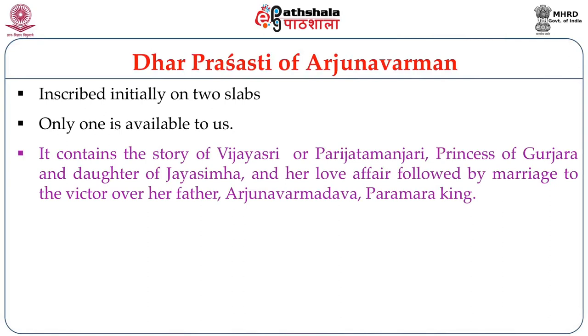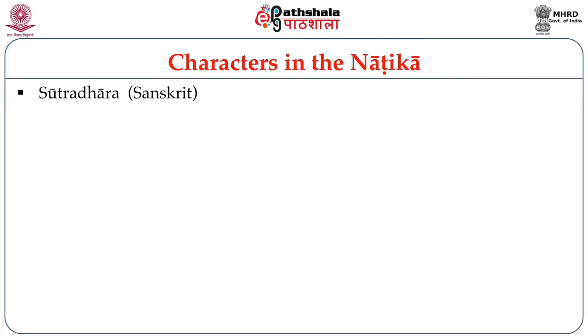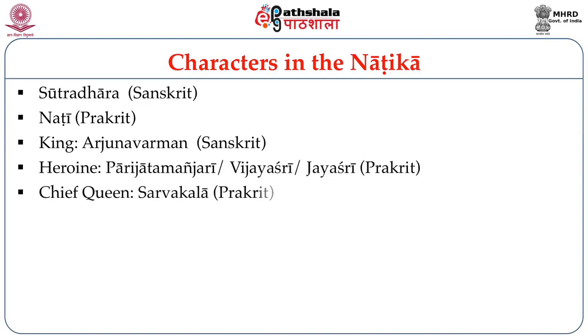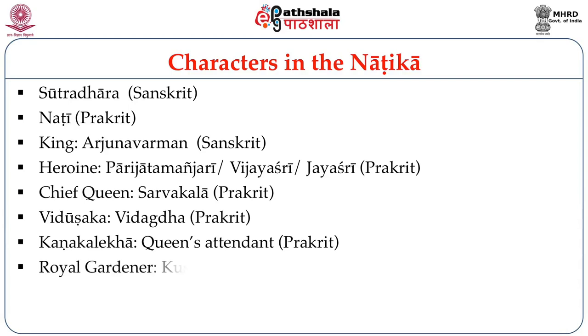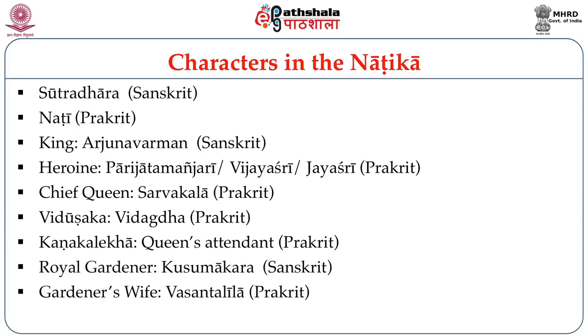The drama is set when Arjuna Varman defeats Jayasingha, the Chahamana king, who was retreating. Later, Arjuna Varman gets married to Parijat Manchari, who is the daughter of Jayasingha. She is called Jaya Sri as the daughter of Jaya Singha, and Vijaya Sri as the fruit of victory in battle. Other characters include a Sutradhar, the Natty who accompanies him, King Arjuna Varman, heroine Parijat Manchari, Chief Queen Sarvakala, Vidushaka named Vidaktha, Queen's attendant Kanakalekha, royal gardener Kusumakar, and his wife Vasanthalila.